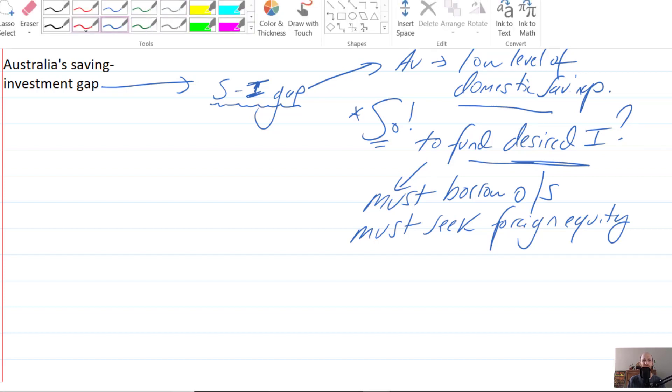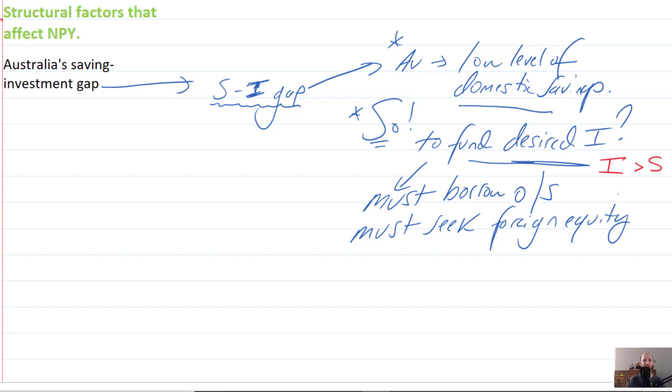Let's put it in a different color, red, because it's so terrifying - here investment exceeds saving. So in order to find that extra money, Australia must borrow from overseas or it must seek foreign equity.